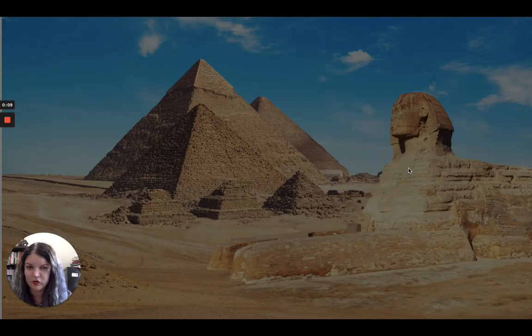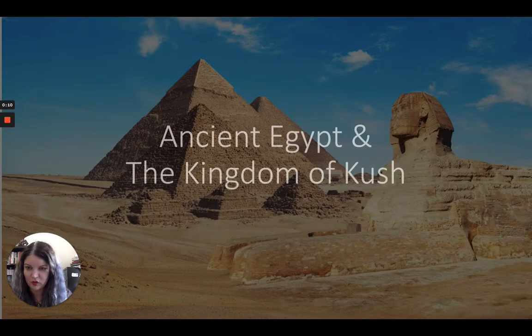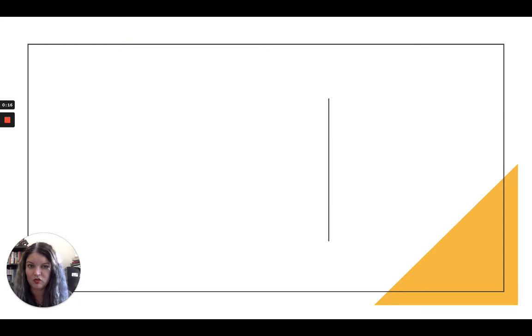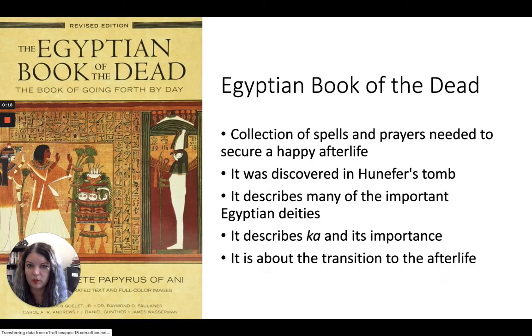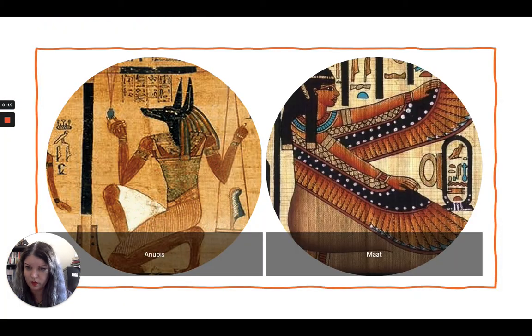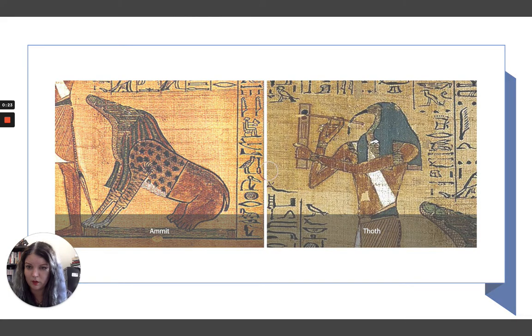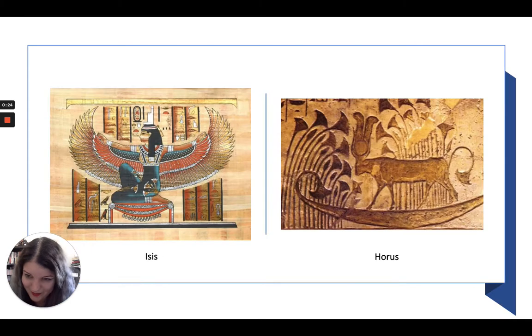This is the second half of our lecture about Ancient Egypt and the Kingdom of Kush. You should have already watched the first half, which is about Ancient Egypt. We're just going to jump through those slides really quickly because I can't get it to start where I want it to start.